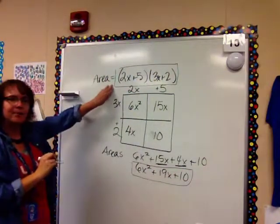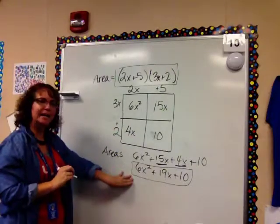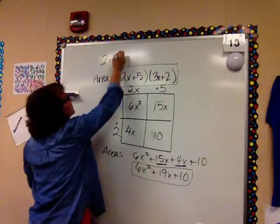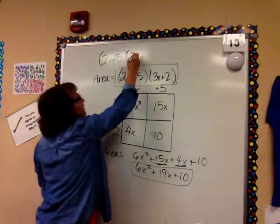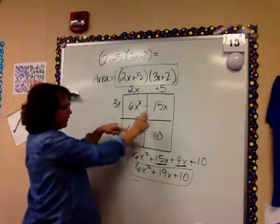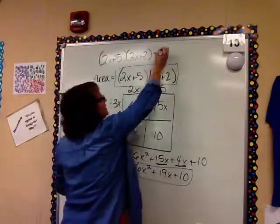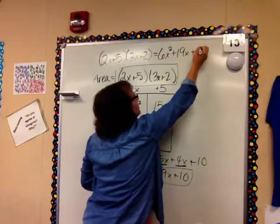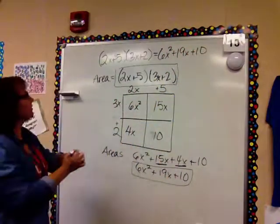This is the area as a product. This is the area as a sum. So I know that 2x plus 5, quantity, times 3x plus 2 is equal to the area of all the parts added together. 6x squared plus 19x plus 10. Those are equivalent.